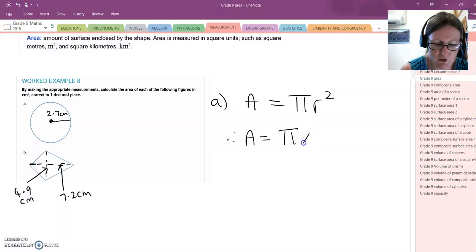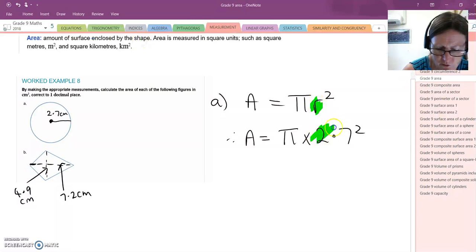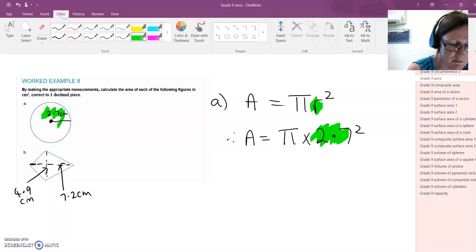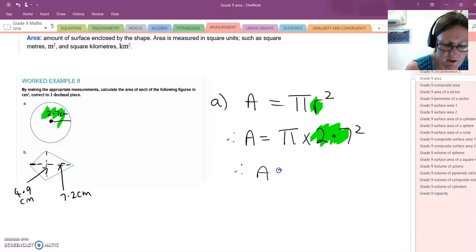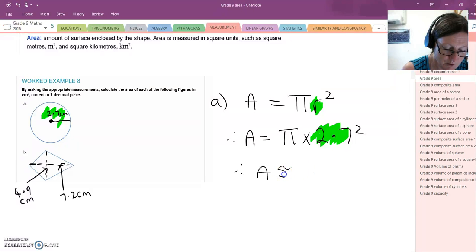So what we do is simply substitute into this formula. So the area equals pi times by, and I've measured this up. It's 2.7 centimetres, so it's pi times 2.7 squared. So all that we have done here is, instead of r, we've put 2.7 because that radius is 2.7. So we've just substituted in the known measurement. And then we put that into our calculator. Area equals pi times 2.7 squared.